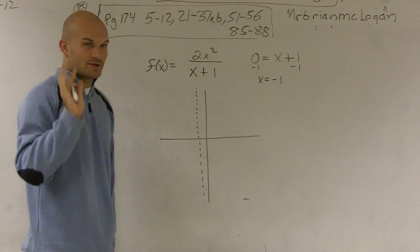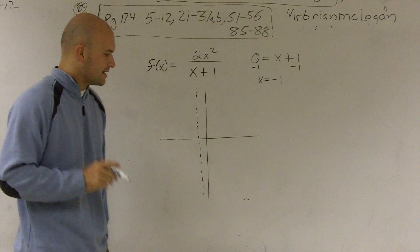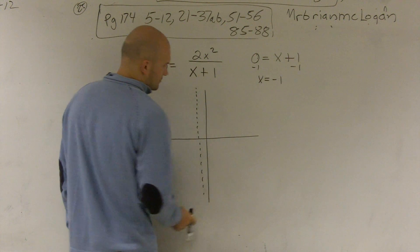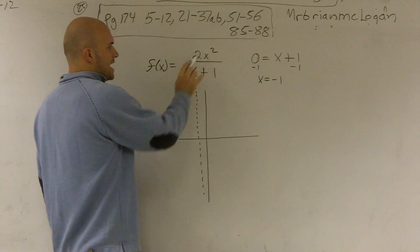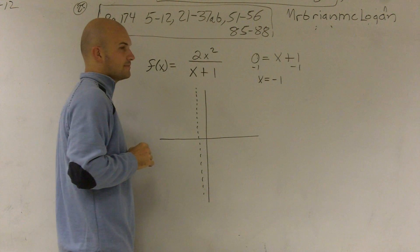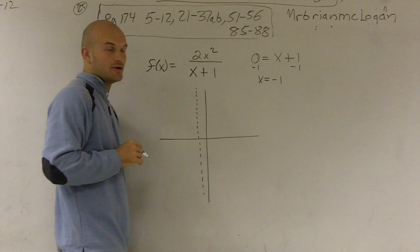To find the horizontal asymptote, there's three little rules we work on. So what we have is we have a polynomial up top and we have a polynomial on the bottom.